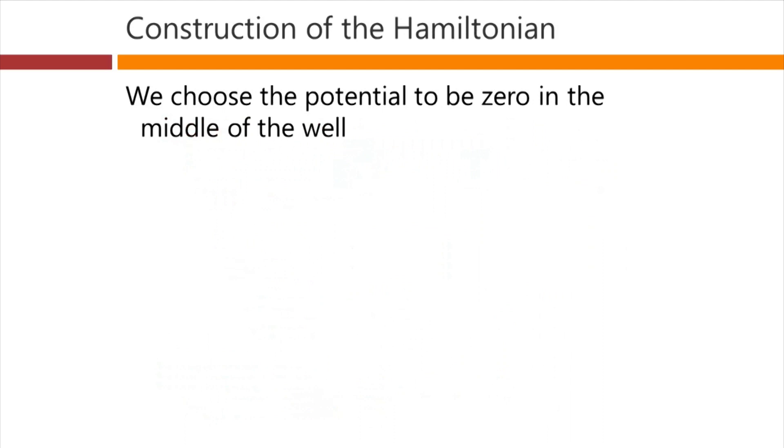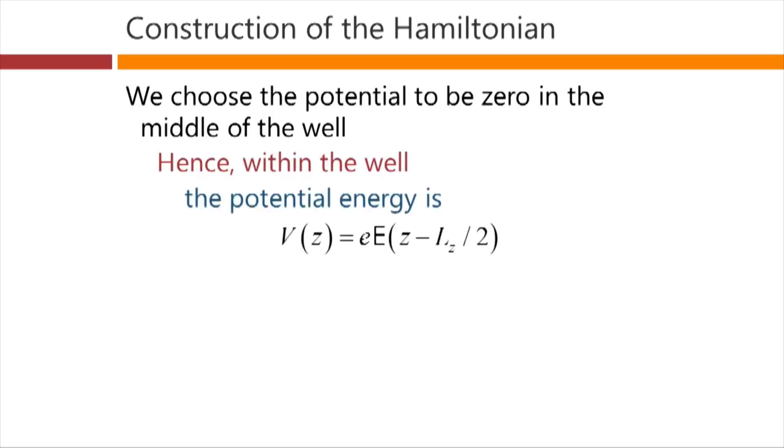Now, in this problem, we're going to choose the potential to be zero in the middle of the well. Hence, within the well, the potential energy is little e, the electronic charge, times the magnitude of the field, times the position relative to the center of the well. So that when z is equal to Lz over 2, that is, in the middle of the well, the potential energy would be zero. That's just a convenient choice for us. It doesn't actually matter what we choose, but we'll choose this one for convenience.